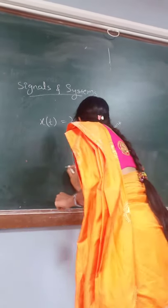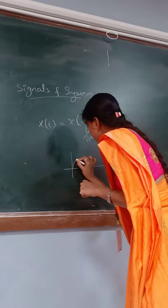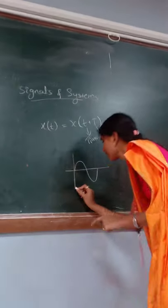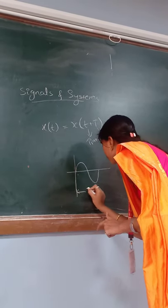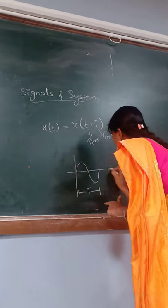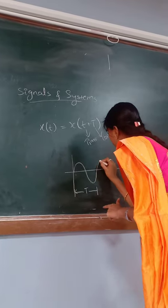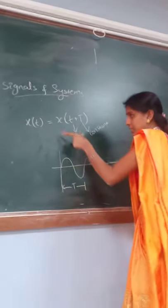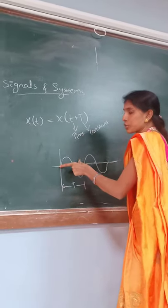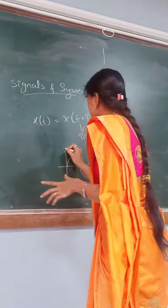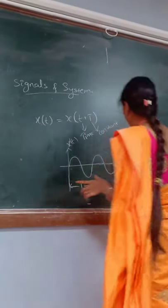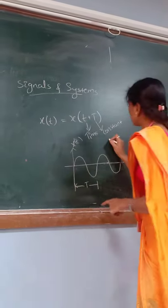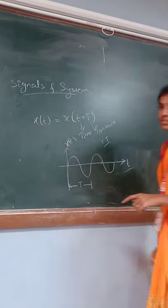This is the example of the periodic signal. Periodic signal means the signal will vary continuously with every instant of time period T, and again the cycle will be repeated. This condition will be satisfied when the signal is said to be periodic, represented by X of T, where the X-axis is represented by the letter T. This format is for the continuous time signal.